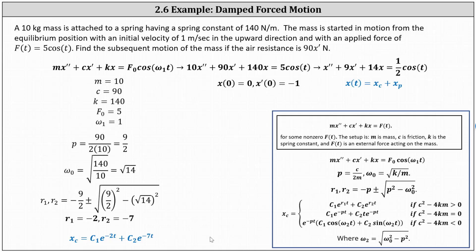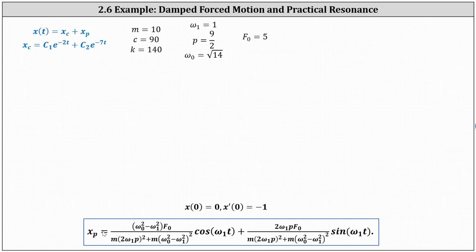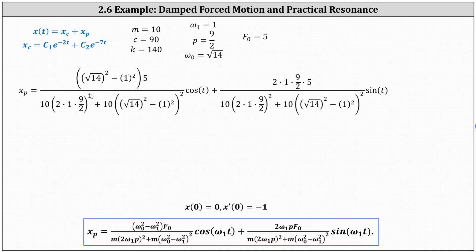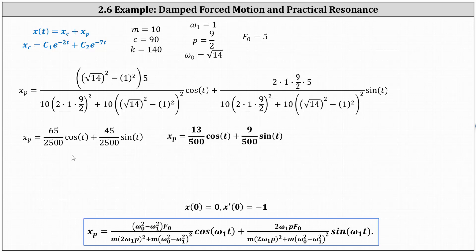The next step is to determine a particular solution. We have the formula at the bottom of the screen for a particular solution for damped forced motion, and all given information at the top. Looking at our formula, we substitute √14 for ω₀, 1 for ω₁, 5 for F₀, 10 for m, and 9/2 for p. This simplifies to x_p = 65/2500 cos t + 45/2500 sin t, and simplifying the fractions gives x_p = 13/500 cos t + 9/500 sin t.